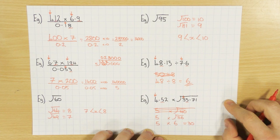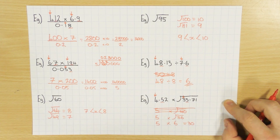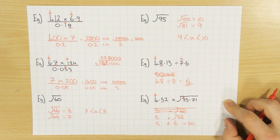Hopefully that helps explain estimating. If you're unsure about how to round to significant figures, make sure to check out that video. Just remember: round to one significant figure and you shouldn't go far wrong. Thanks for watching, guys.